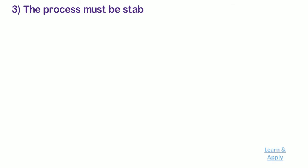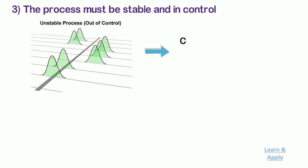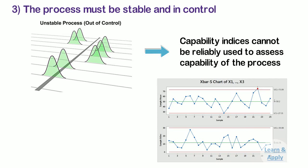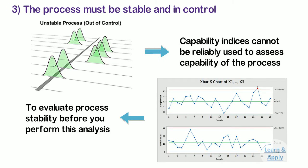Third, the process must be stable and in control. If the current process is not stable, then the capability indices cannot be reliably used to assess the future and ongoing capability of the process. If you are not sure whether your process is in control, use X-bar R or S chart to evaluate the process stability before you perform this analysis.